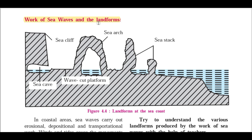Let's see which type of landforms are made by these sea waves. In this picture you can see landforms made by sea waves. There is a sea cliff, which is a near-90-degree vertical portion of a mountain adjacent to the sea. Because of erosion we also get sea caves, a wave cut platform, a sea arc which is a semicircle made of rock material, and sea stacks which are pillar-like structures formed by the erosional work of sea waves.